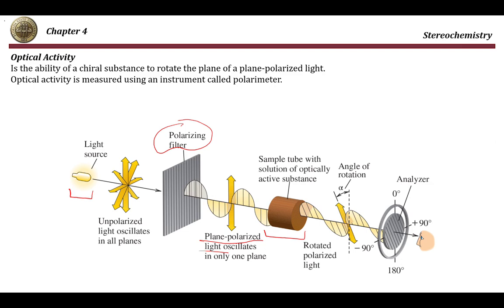When this light, called plane-polarized light, passes through a tube containing the sample you are testing, if this sample is optically active — meaning it is able to interact with light — it is going to cause a rotation of this light. Instead of moving undeviated, it will deviate by a certain angle alpha, either to the right or to the left, and at the analyzer or detector the angle of deviation is measured.